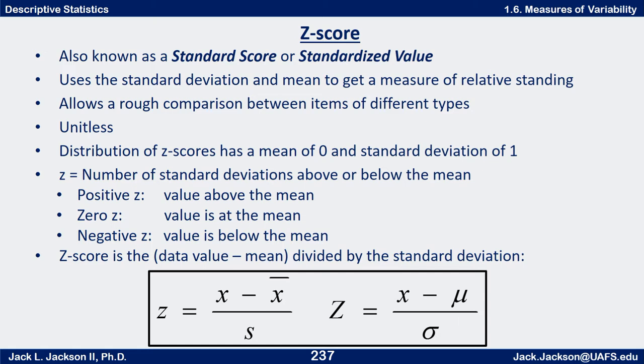The way you compute it is you take the data value minus the mean and divide by the standard deviation. For a sample, lowercase z equals x minus x-bar over s, where x-bar is the sample mean and s is the sample standard deviation. For a population, capital Z equals x minus mu over sigma. It's basically the same formula both ways.